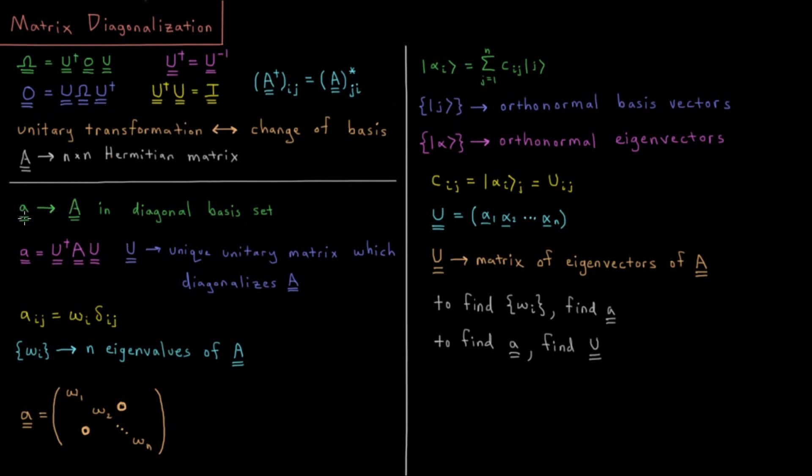So there's another matrix which we'll talk about here called little a, and this is the matrix A in a basis set in which A is diagonal. So what we want here is we have little a is equal to a unitary transformation of A, where this U is the unique unitary matrix which is going to diagonalize A.